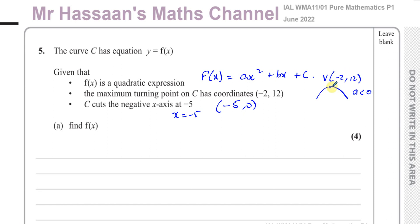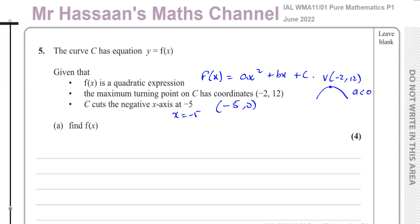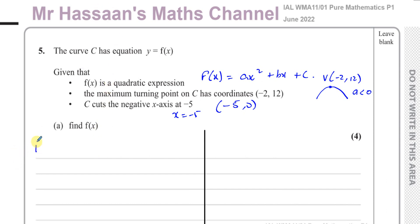One way, we could use the fact that we know the vertex and we know this point, and we'll be able to find the equation. The other way is we know this is one of the roots, and since we know the vertex, we can find the other root using symmetry. Once we know two roots and a point the curve passes through, we can find the equation that way. I'm going to show both ways as a check.